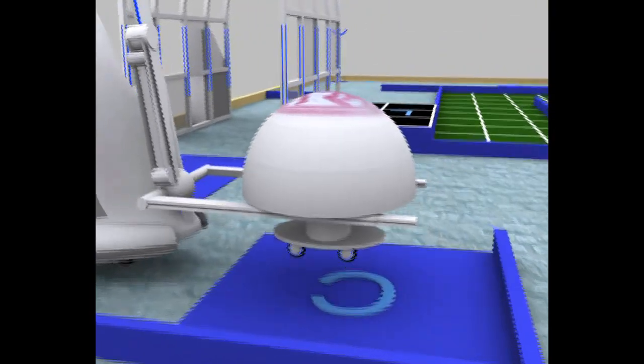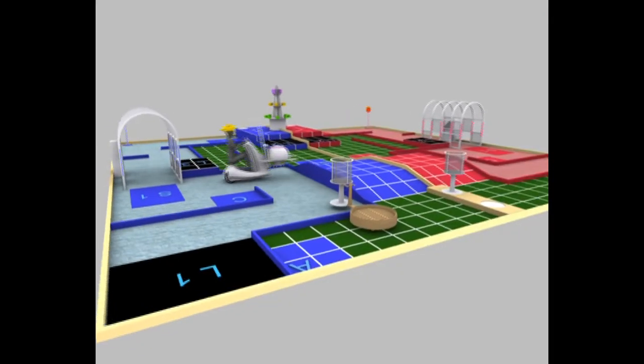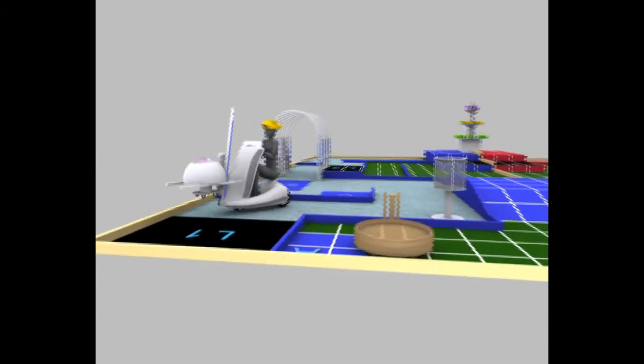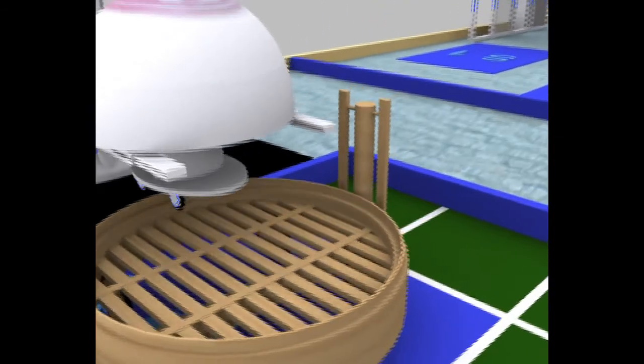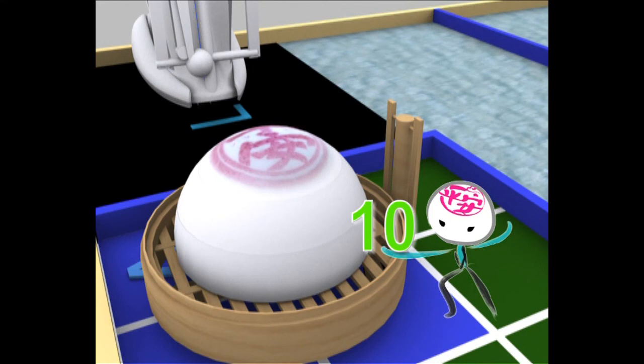At the same time, manual robot should carry the collector robot to the loading area 1 and unload it on the automatic robot. You score 10 points for this.